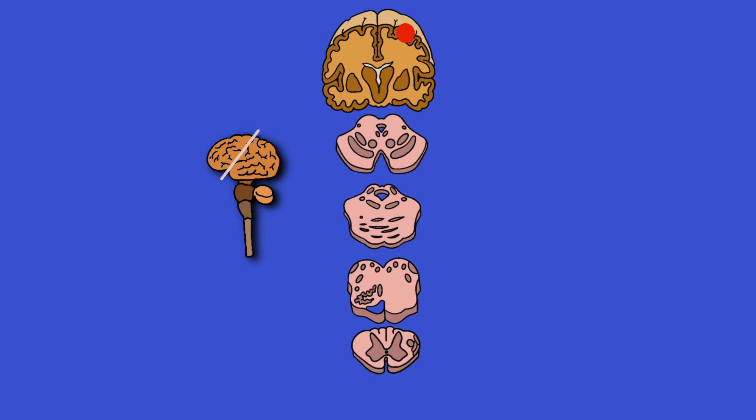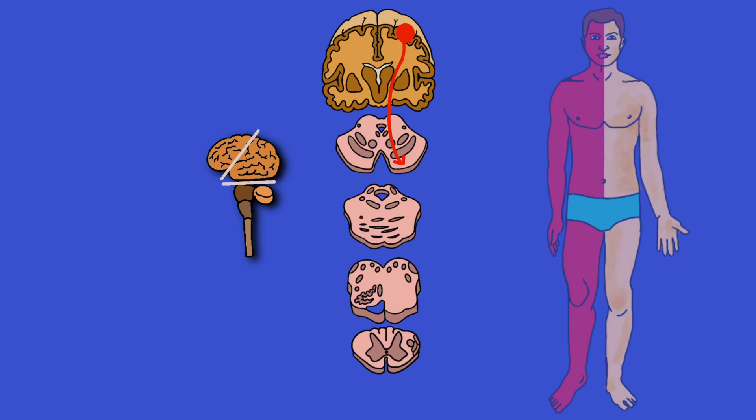Another cardinal sign of uncal herniation is a contralateral hemiparesis due to compression or displacement of the corticospinal tract.